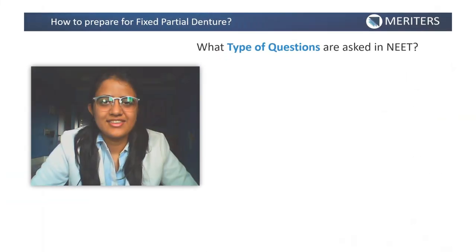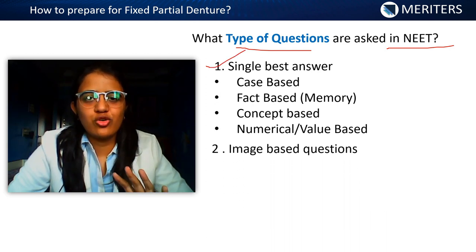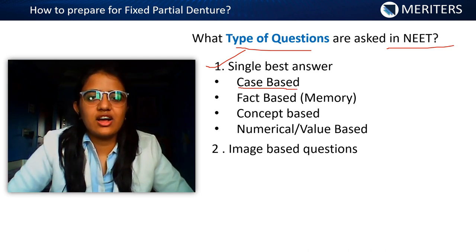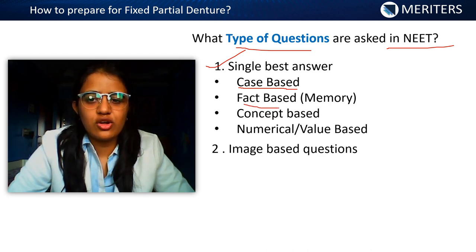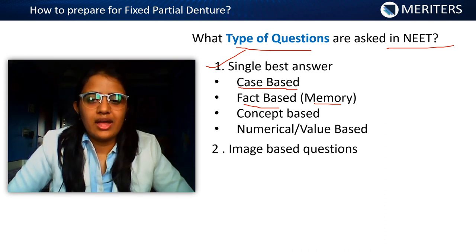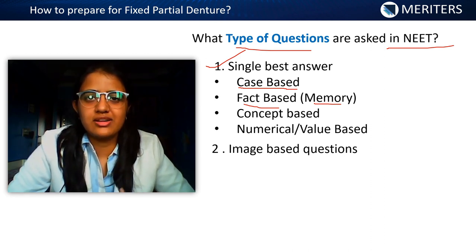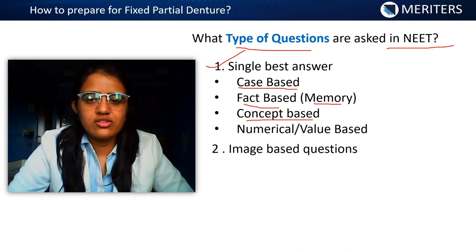The types of questions asked in the NEET MDS exam include: single best answer questions with four options, including case-based questions such as which type of pontic to use in an anterior aesthetic zone versus a posterior non-aesthetic zone, or which non-rigid connector to use for a pier abutment. Fact-based or memory-based questions cover types of pontics, types of connectors, which side the key lies on, concentrations of gingival retraction materials, impression materials, and techniques for provisional crowns.